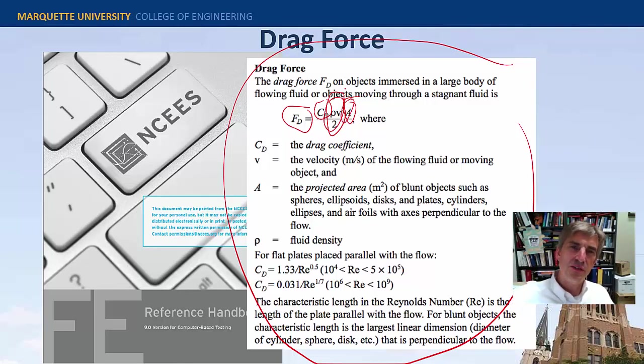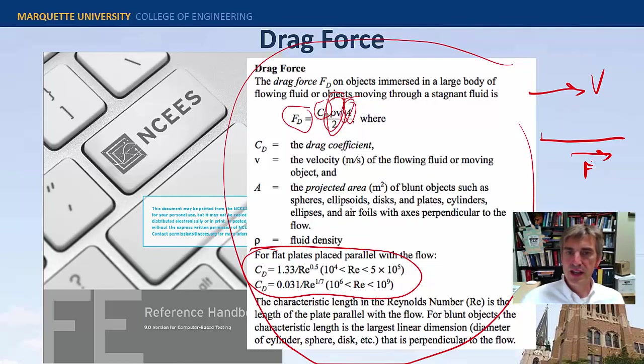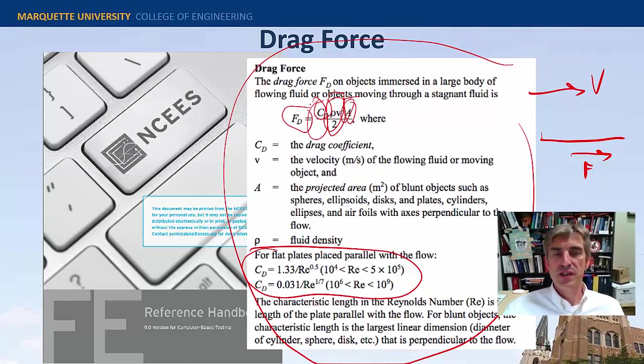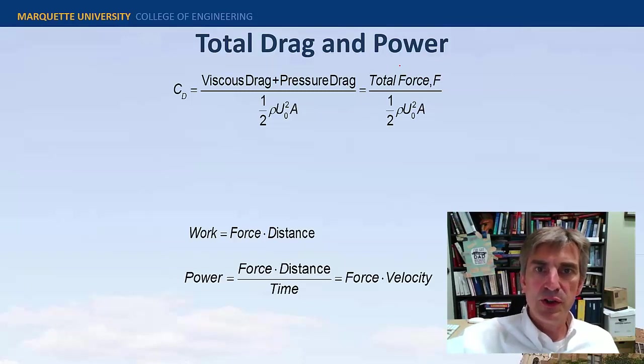And the only coefficients of drag they provided are these guys right here. So that's drag on a flat plate placed parallel to a flow stream. So you've got a flat plate, you've got a flow stream here, the velocity is v. What's the drag force in that direction? That's what that is. Not a lot of questions they could ask you based on that. The thing they could do is give you the drag coefficients and then you could make some calculations there.